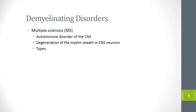When demyelination and subsequent degeneration of neural fibers in the CNS occurs, the patient may start experiencing symptoms. A demyelinated nerve does not conduct electrical signals properly and may have different conduction abnormalities. Tests may measure conduction velocity changes, decrease, or conduction block.